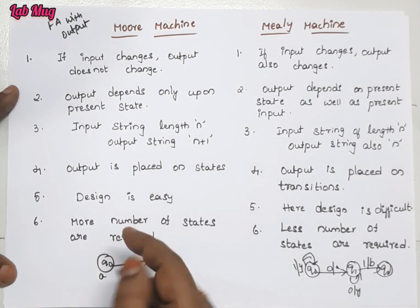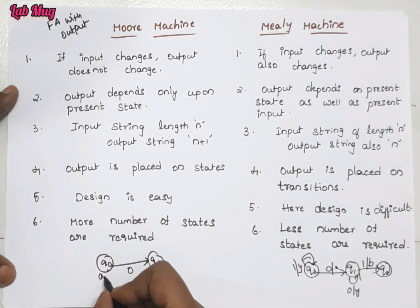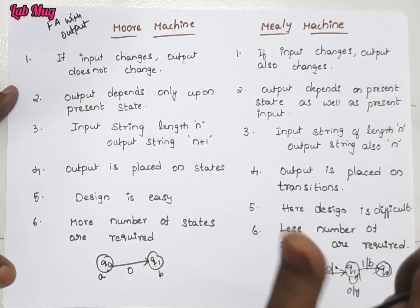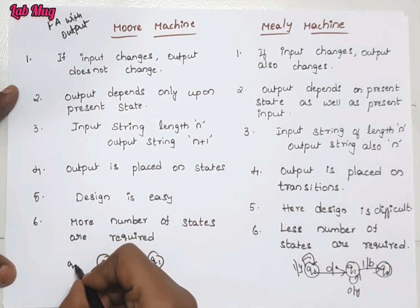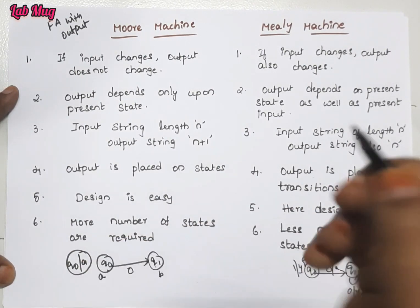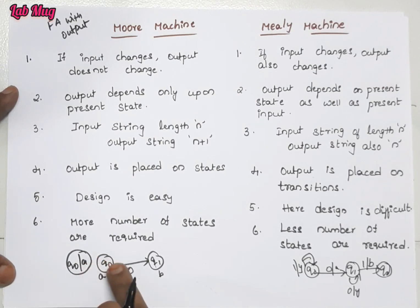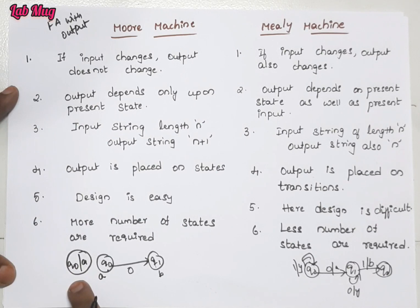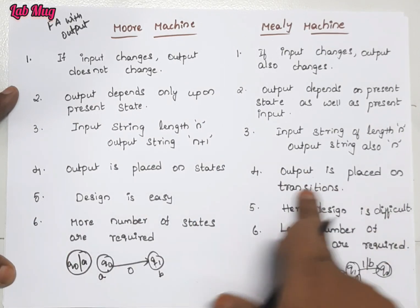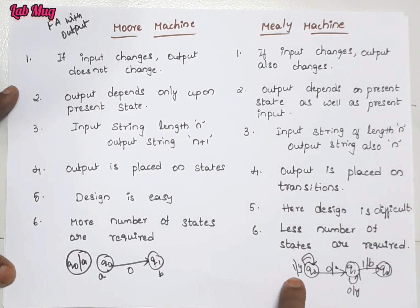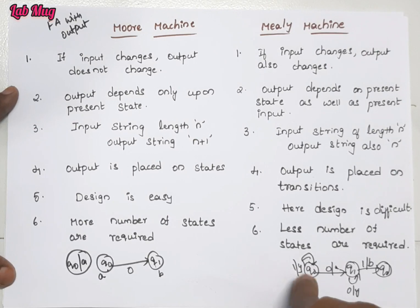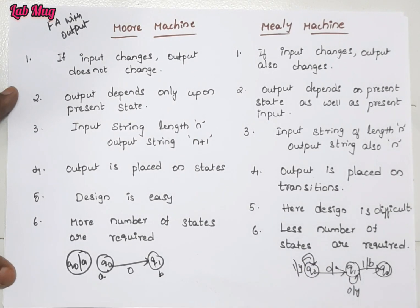In Moore machine, the output is placed on the states — we place output at q0 itself because it is the common output. So we mention it as q0/output. That is the common output regardless of transitions. But in Mealy machine, output is placed on the transition — for each input symbol causing a transition, the output depends on that specific input symbol, so we mention it on the transition.